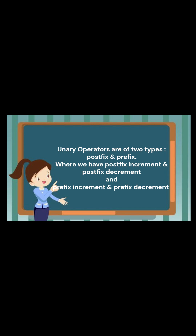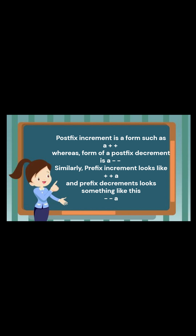Unary operators are of two types: postfix and prefix. We have postfix increment, postfix decrement, prefix increment, and prefix decrement. Postfix increment has the form A++, whereas postfix decrement has the form A--. Similarly, prefix increment looks like ++A and prefix decrement looks like --A.